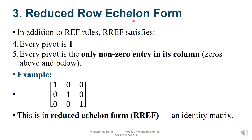Reduced row echelon form: in addition to the echelon form conditions, reduced row echelon form must also satisfy that each pivot is 1, and each pivot is the only non-zero entry in its column, with zeros above and below. As you can see in this matrix, this is reduced row echelon form — all other elements are 0.